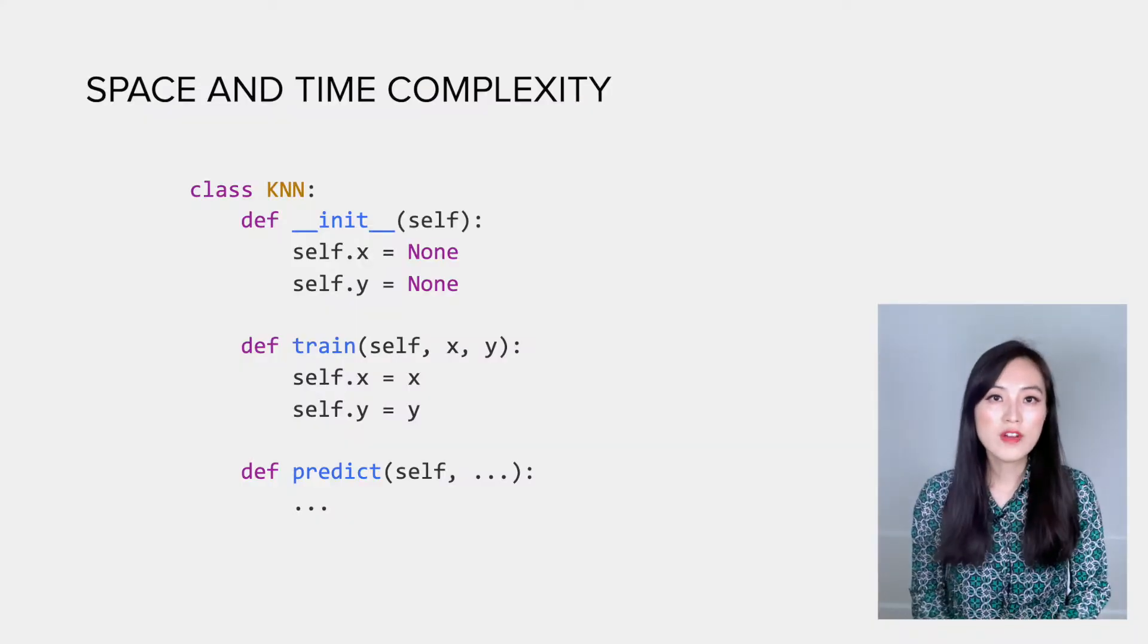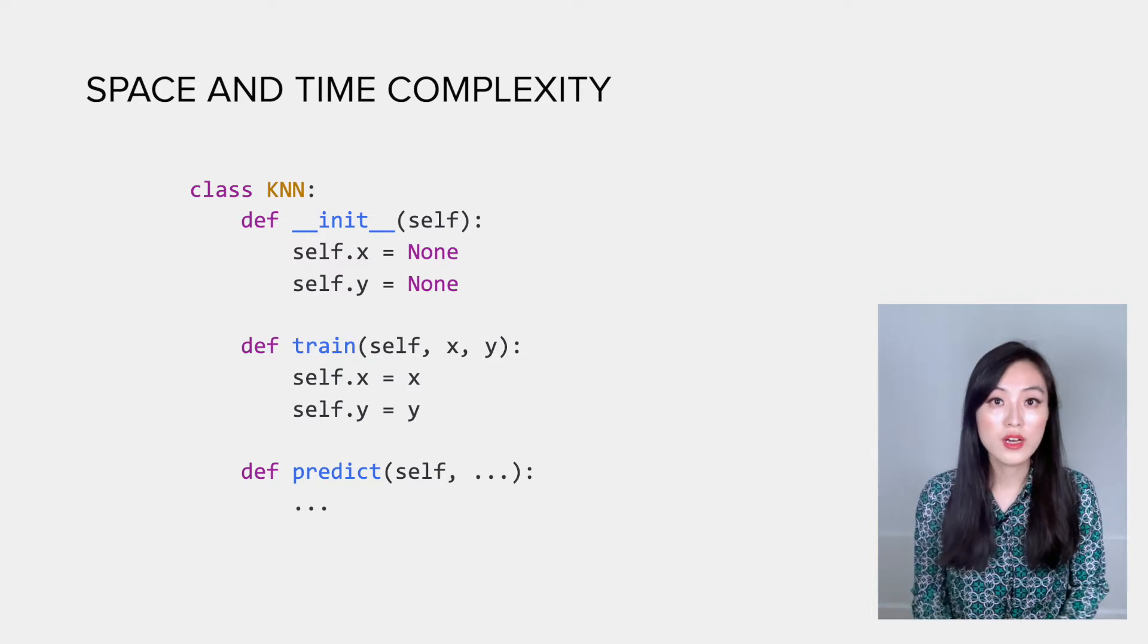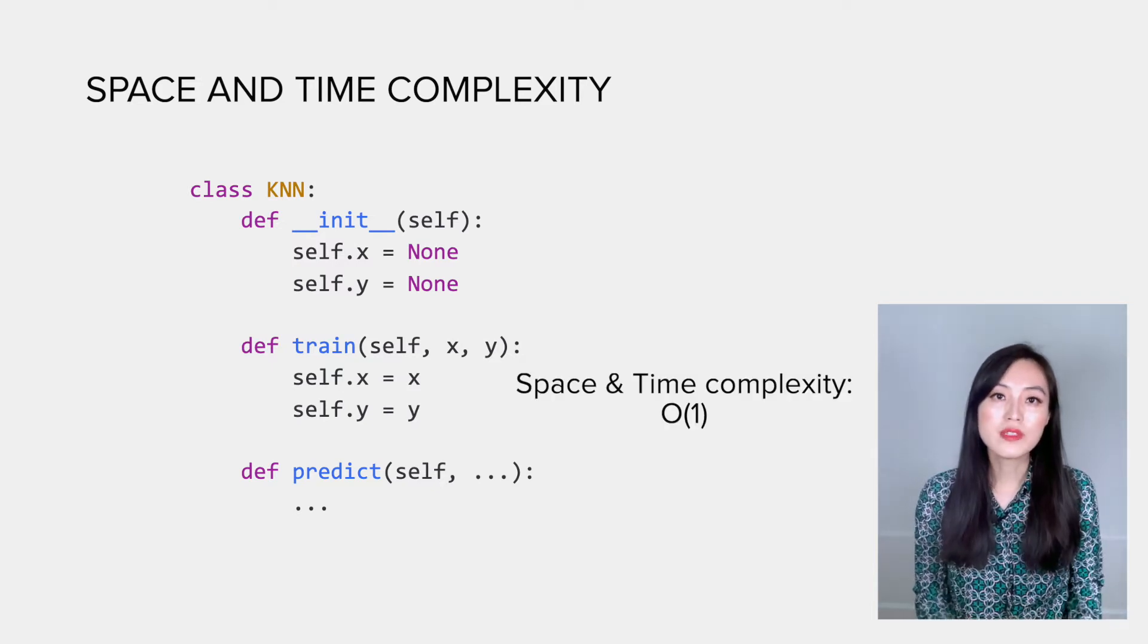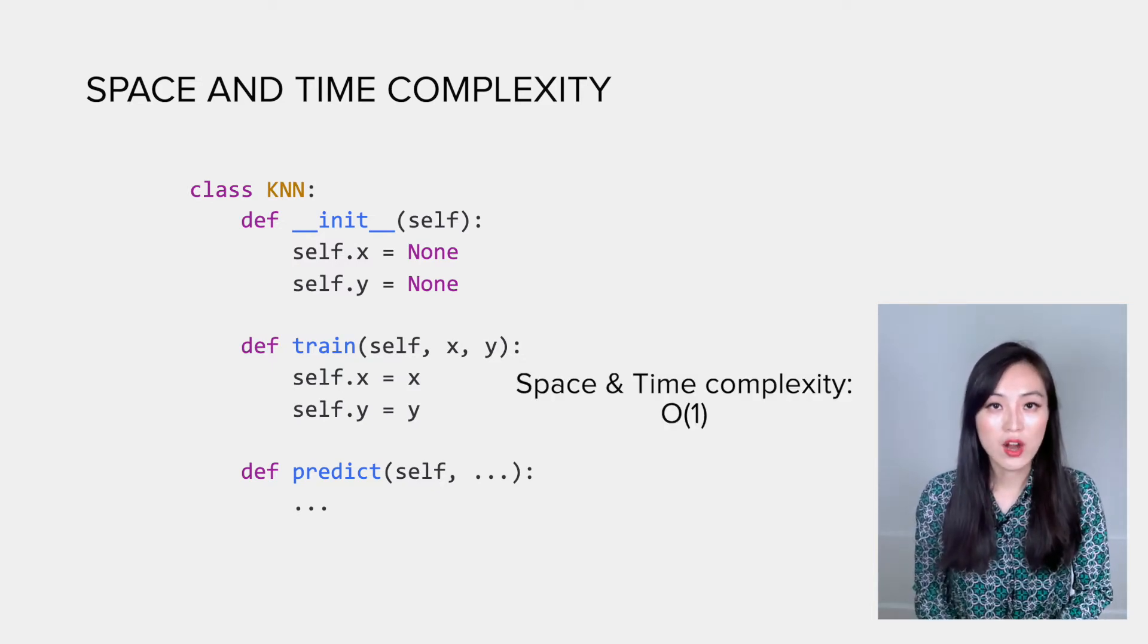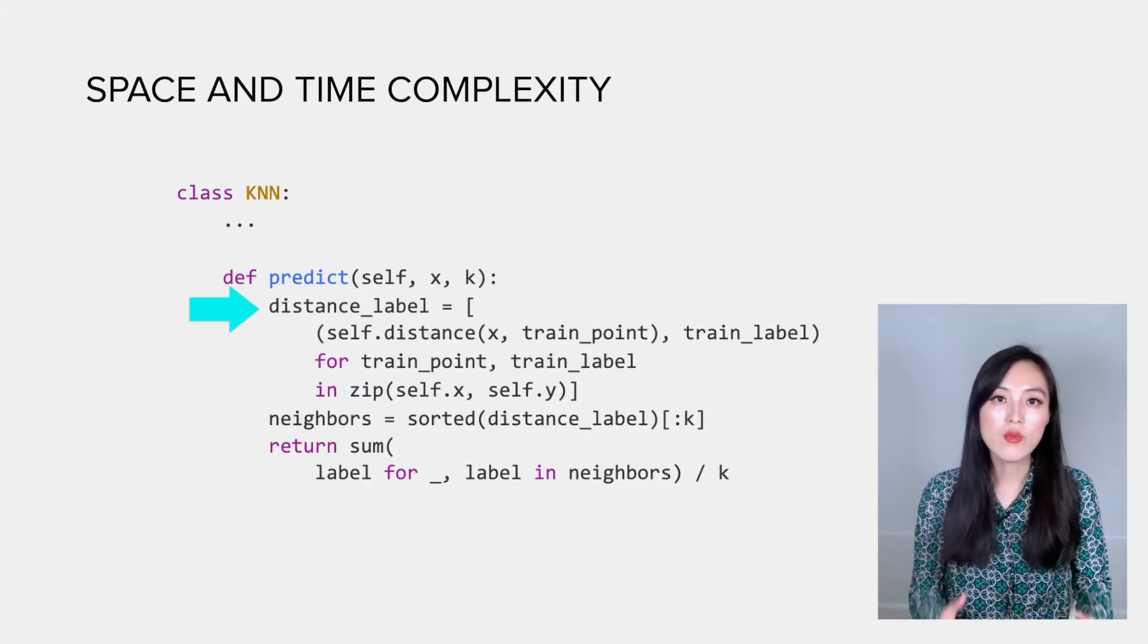We have just completed the implementation of KNN to do both classification and regression. It's much simpler than a few other algorithms, right? Now let's take a look at its time and space complexity. In the train function, we simply create two variables x and y and point them to the input data, so both the space and time complexity are O(1).